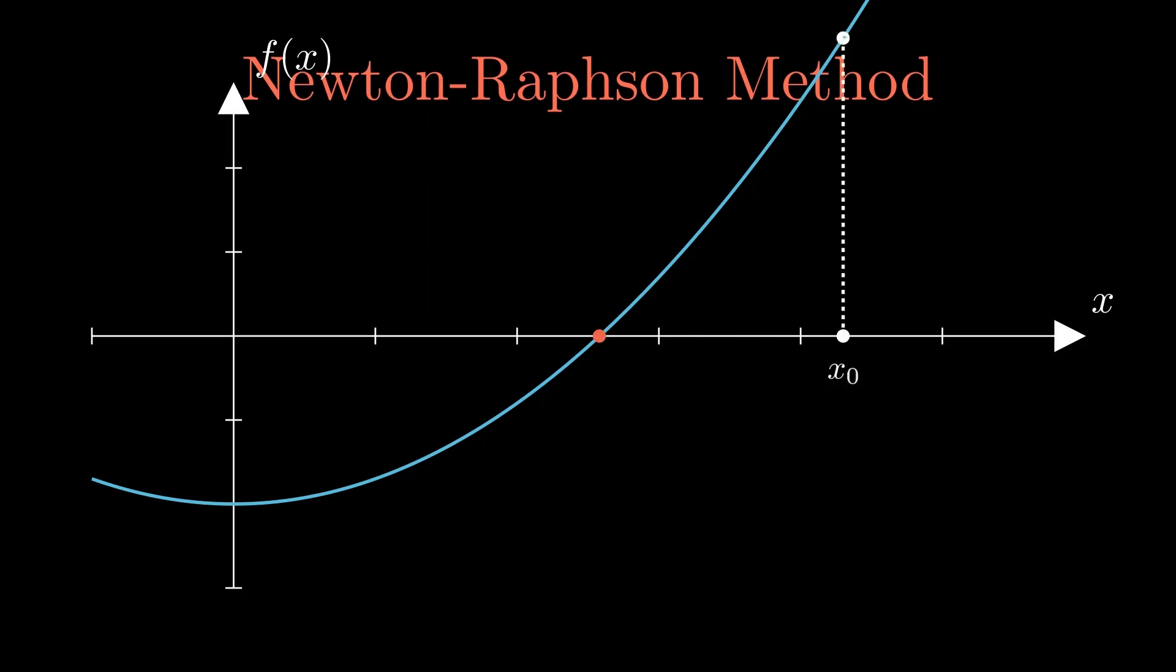We draw a tangent line at this point which intersects the x-axis at another point, which we will call x1. You might notice x1 is closer to the root than x0. Now, we keep going drawing tangents and finding new intercepts. As we repeat this process, each tangent brings us nearer to the root.